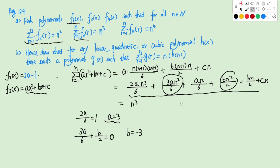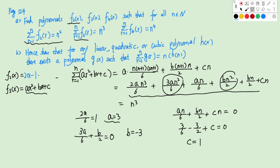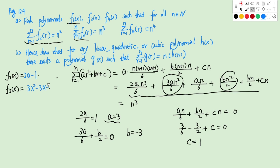For the linear terms: A/6 plus B/2 plus C equals 0. With A equals 3 and B equals negative 3: 3/6 minus 3/2 plus C equals 0, so C equals 1. Therefore F3(x) equals 3x squared minus 3x plus 1.